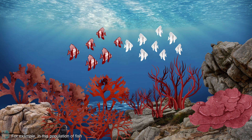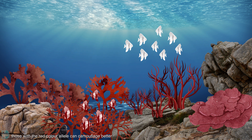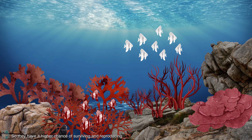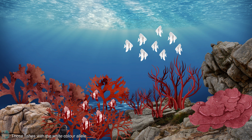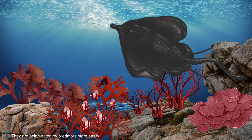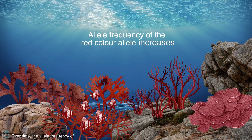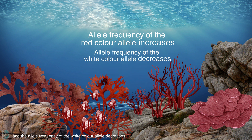For example, in this population of fish, those with the red-coloured allele can camouflage better. They are not spotted so easily by predators, so they have a higher chance of surviving and reproducing. They can pass these beneficial alleles to the offspring. Those fish with the white-coloured allele are said to have a selective disadvantage — they are eaten by predators much more easily. Over time, the allele frequency of the red-coloured allele increases and the allele frequency of the white-coloured allele decreases.